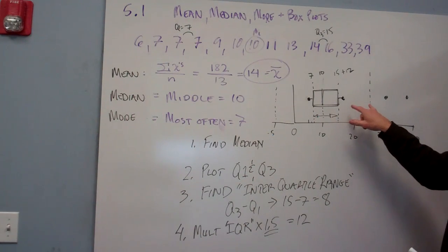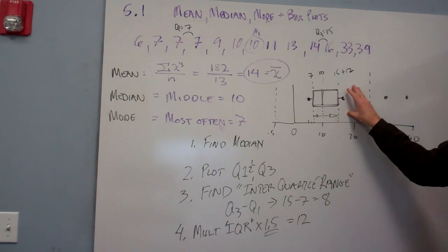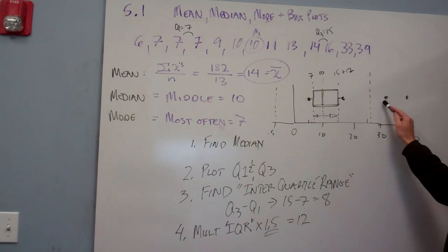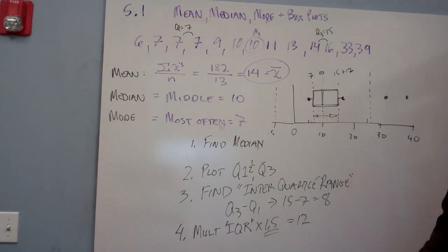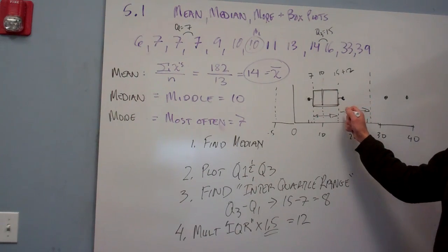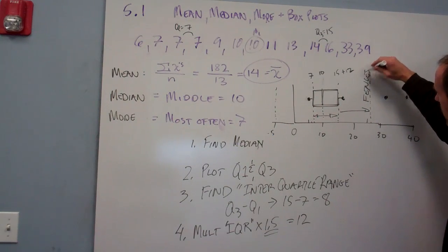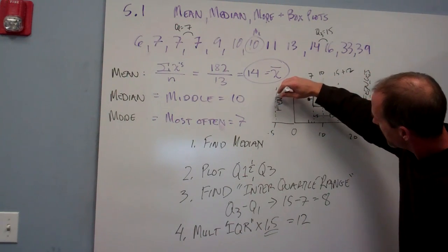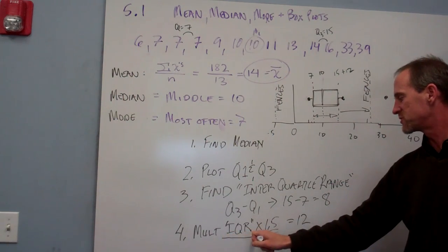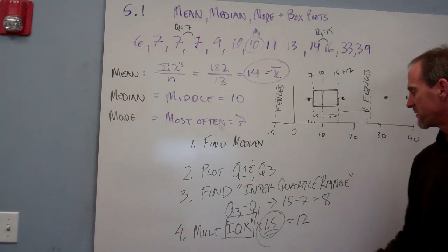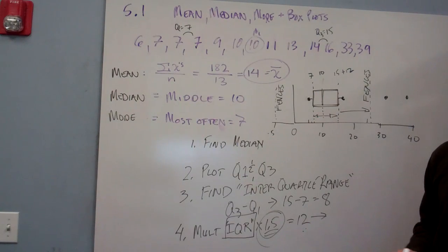You'll see in your own data sets that sometimes you have no outliers, sometimes you'll have more than one. In this case, we have two, so don't let that throw you off. The main thing is how far you put these fences to determine whether or not something is an outlier. And again, that is right here: it is the difference between your Q1 and Q3 times 1.5. That tells you how far on either side of your quartiles you put that fence.